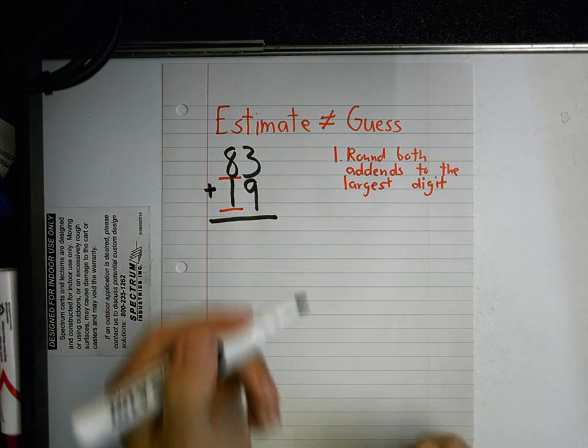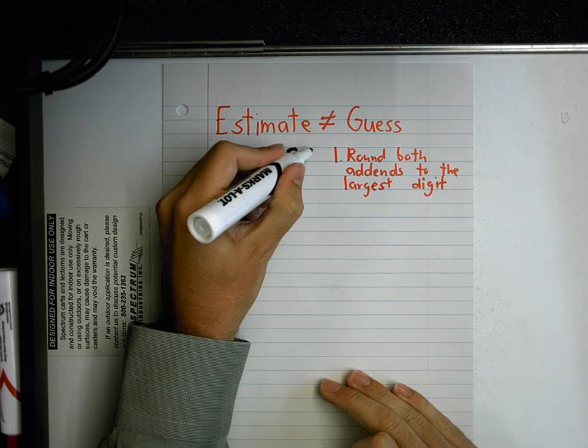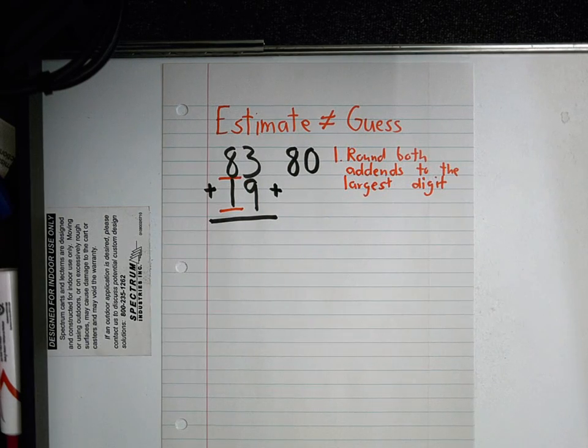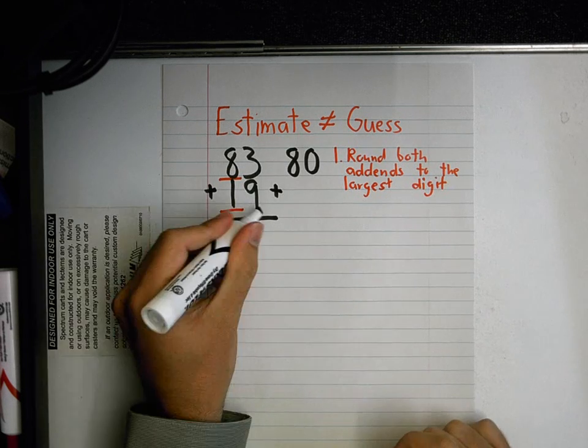John? 80. Boom, right here, 80. Who can tell me what 19 is if I round to the largest digit, the tens? 20. Yeah, because nine is bigger than five, that one becomes a two.